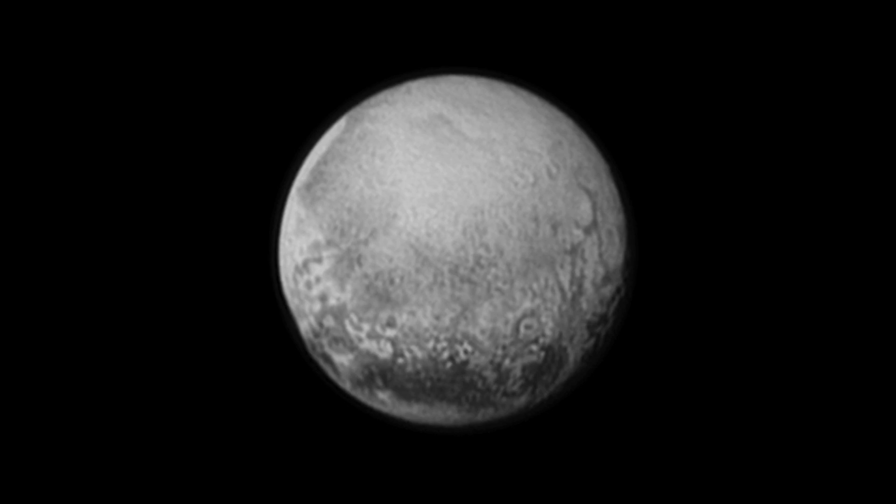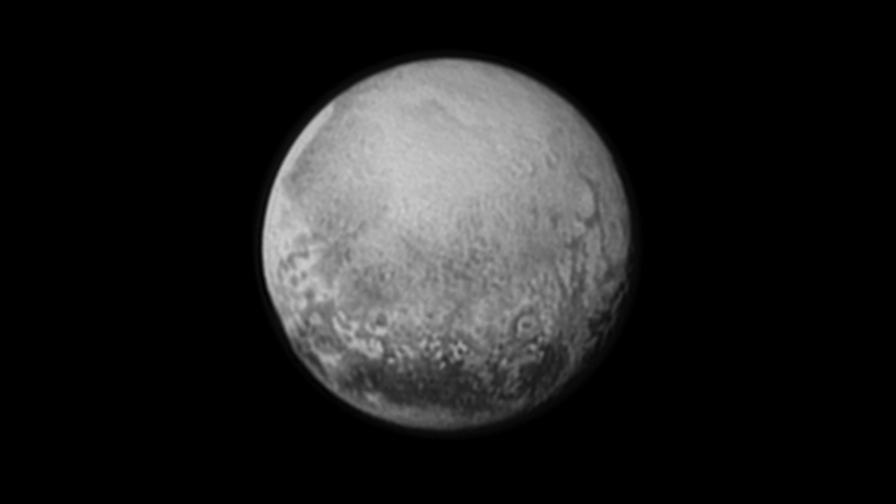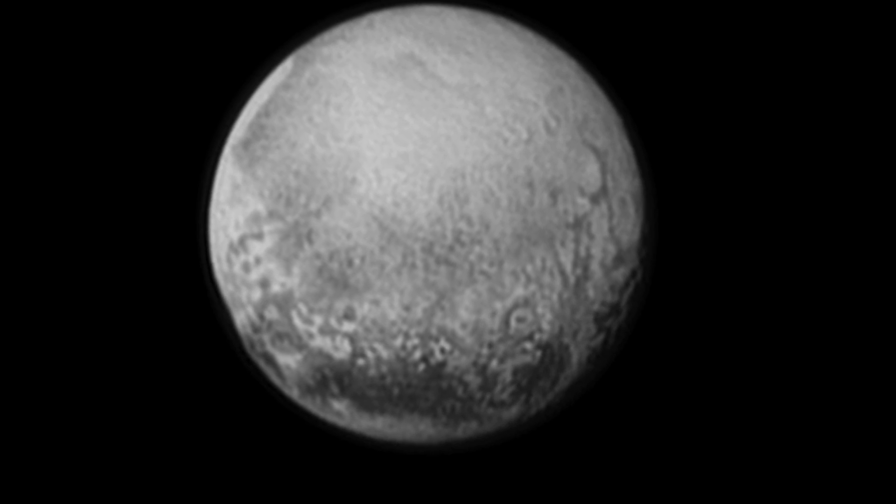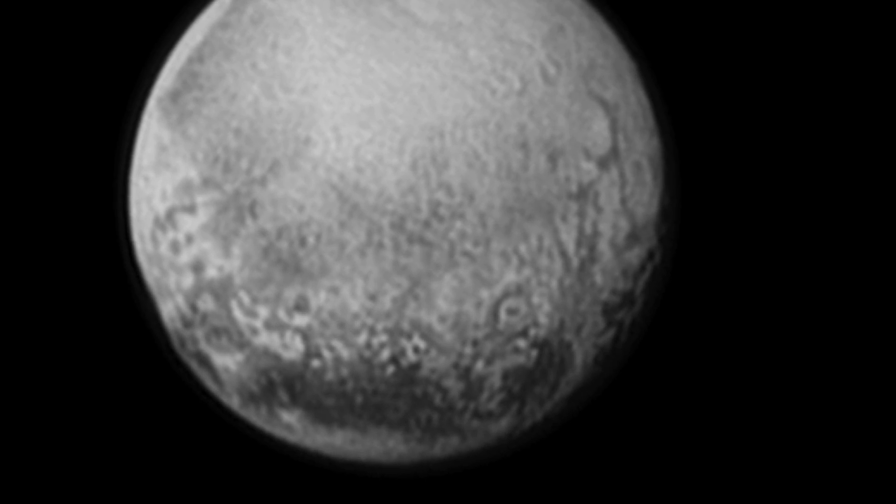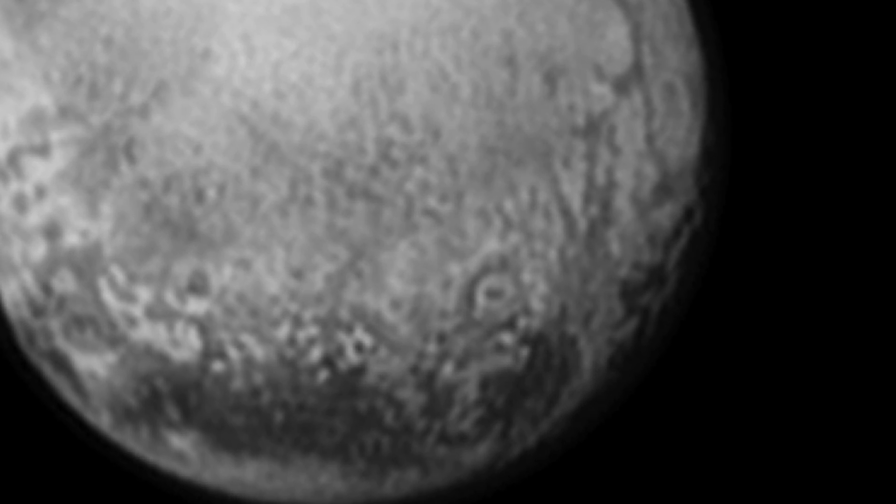I can also show you this image taken by New Horizons three days ago from a distance of a little over one million miles. It shows the other side of Pluto. Notice the circular feature on the lower right. Is it a crater? The caldera of a great volcano? Who knows? Maybe we'll find out soon.